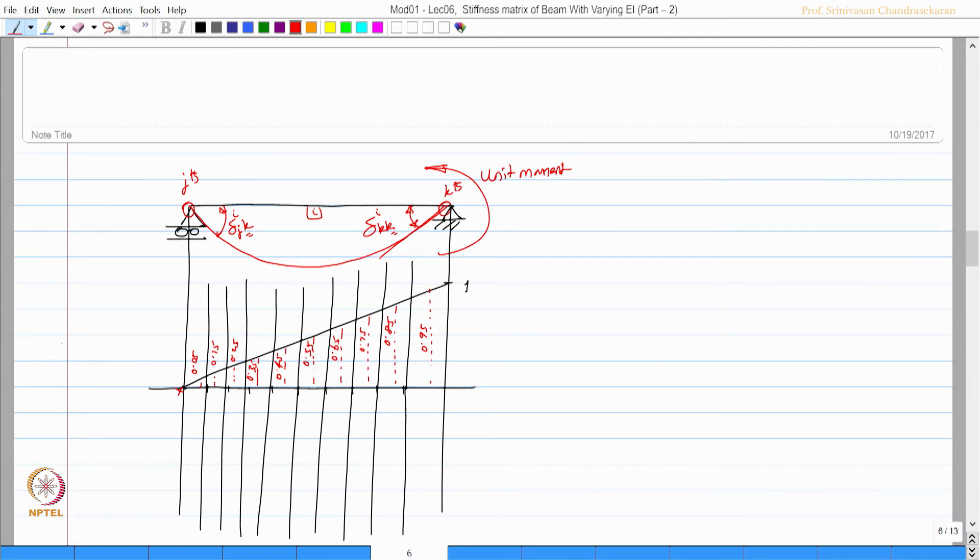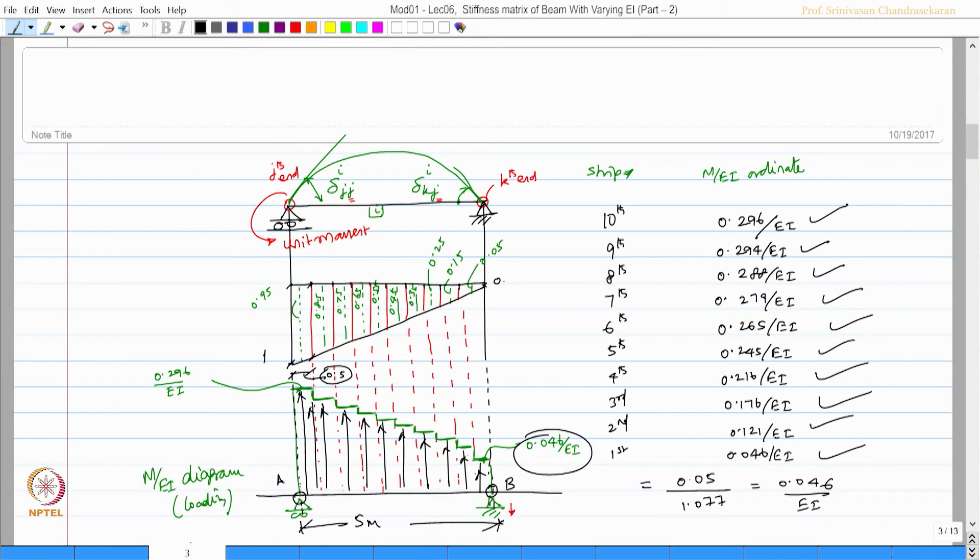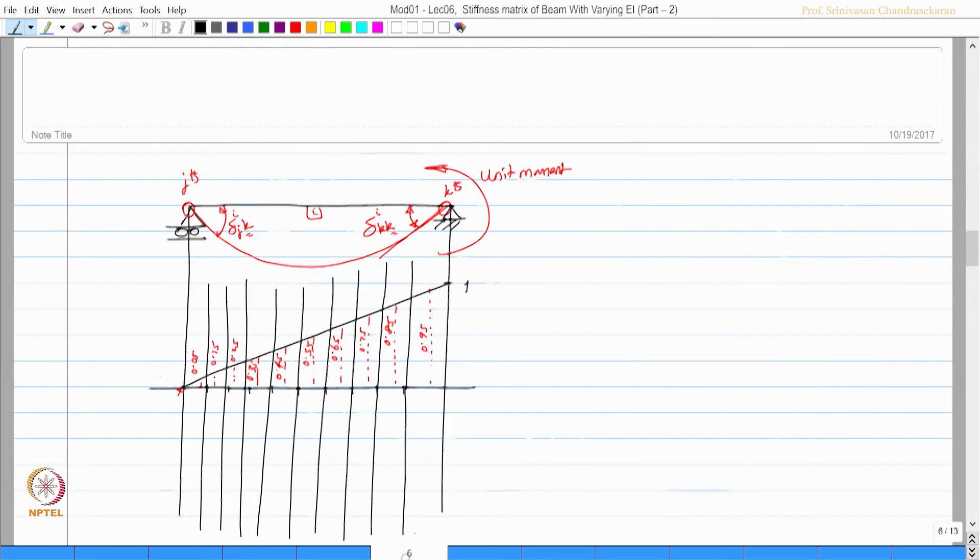So now we can calculate similarly what we have done here. We have done the M by a ordinate for all the 10 strips. We can also do here the strip and M by a ordinate. Let us say this is my first strip and this is my 10th strip.